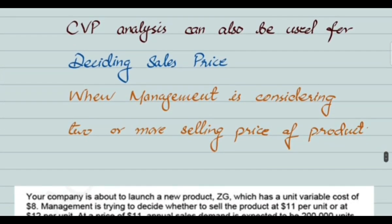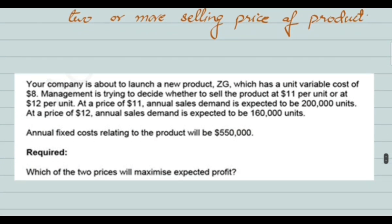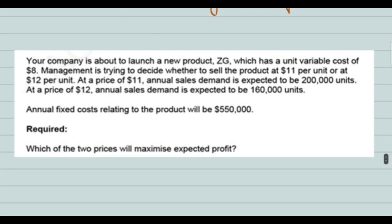CVP analysis can also be used to decide selling price. For example, your company is about to launch a new product ZG, which has a unit variable cost of $8. You need to decide whether to sell the product at $11 per unit or $12 per unit.